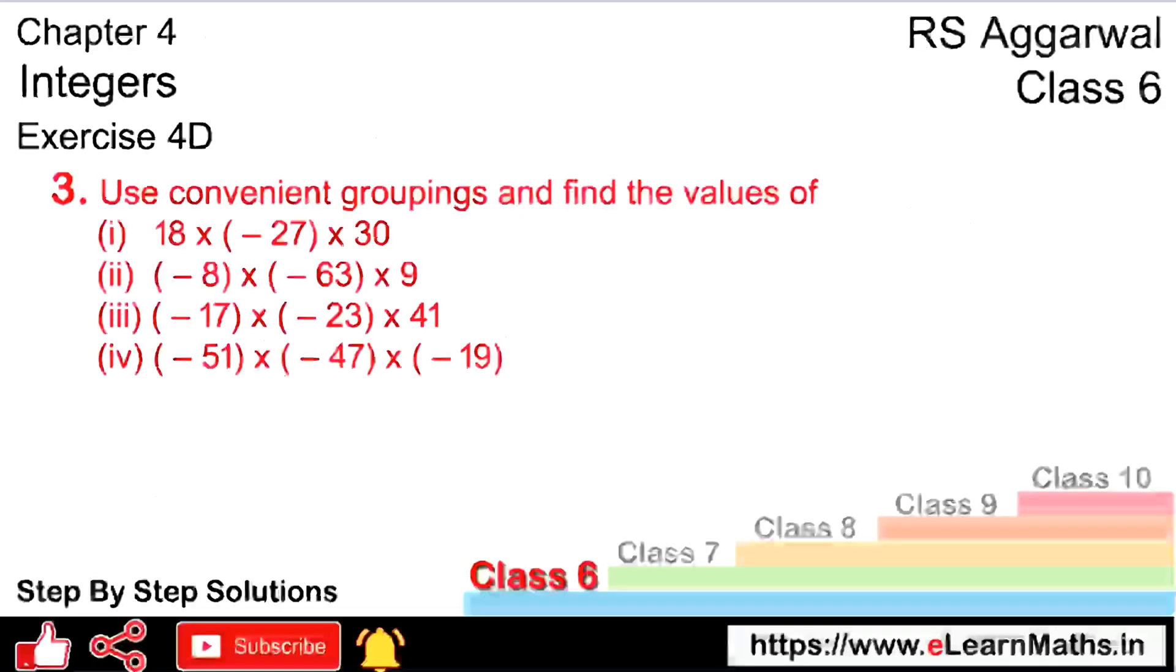Third part: (-17) × (-23) × 41. In both groups we take the negatives together. (-17) × (-23): minus minus equals plus, so no negative sign needed. Now 23 × 17: 7×3 is 21 carry 2, 7×2 is 14, 15, 16. Then 1×3 is 3, 1×2 is 2. This equals 391.